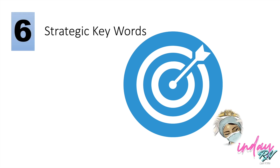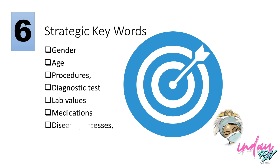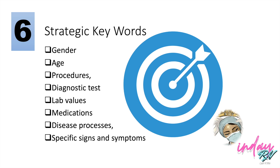The sixth strategy is to identify strategic keywords from the scenario, such as gender, age, procedures, diagnostic tests, laboratory values, medications, disease processes, or specific signs and symptoms. Even if an answer choice mentions the most difficult diagnosis, do not consider it unless it matches the strategic keywords in the question. It is not always the most difficult disease that is the priority — it depends on the situation.